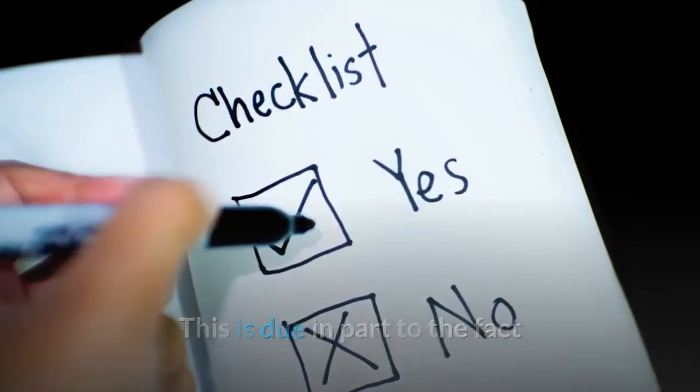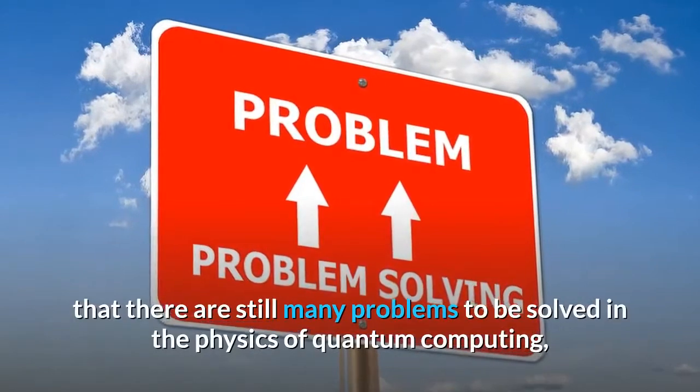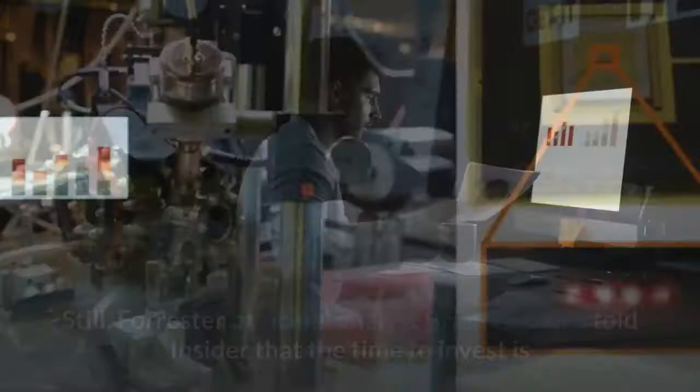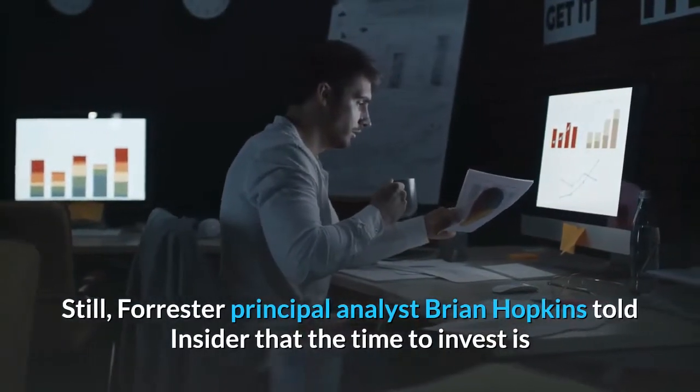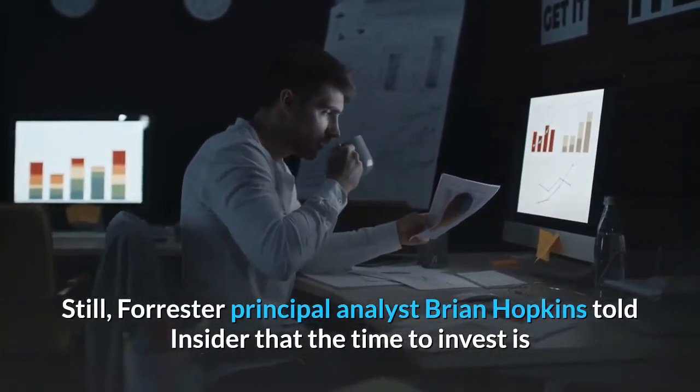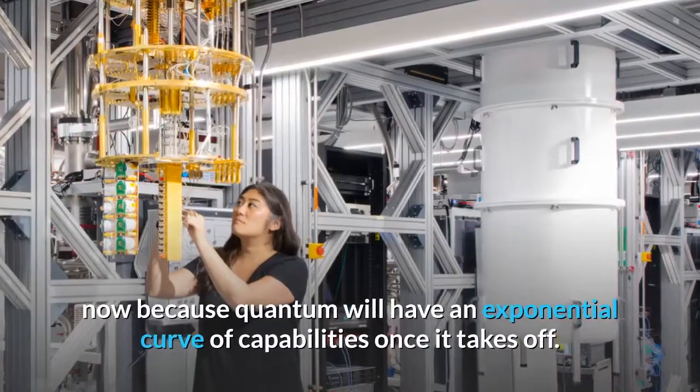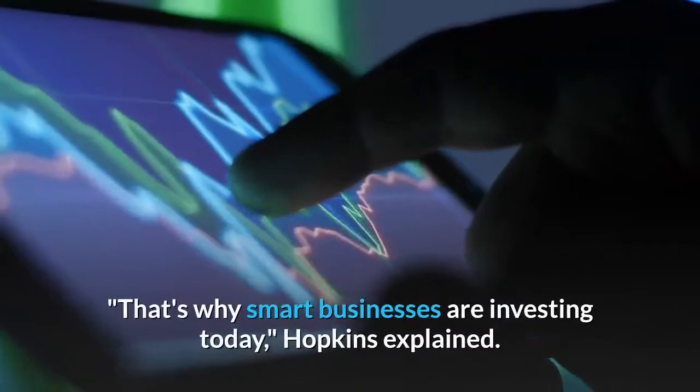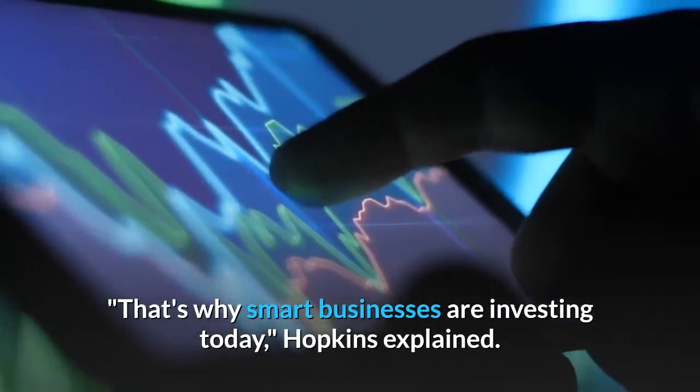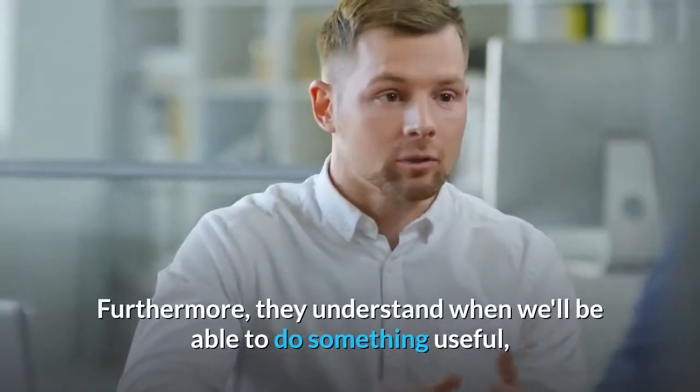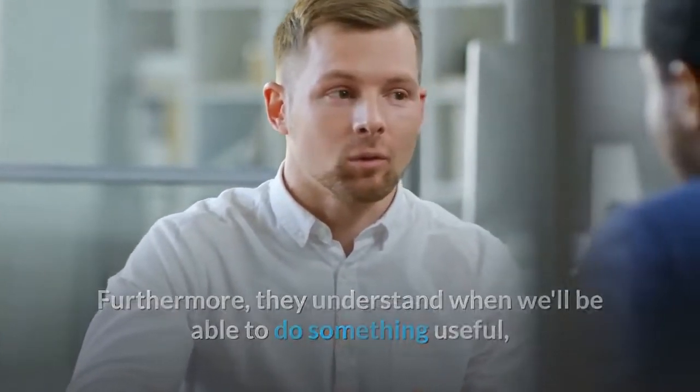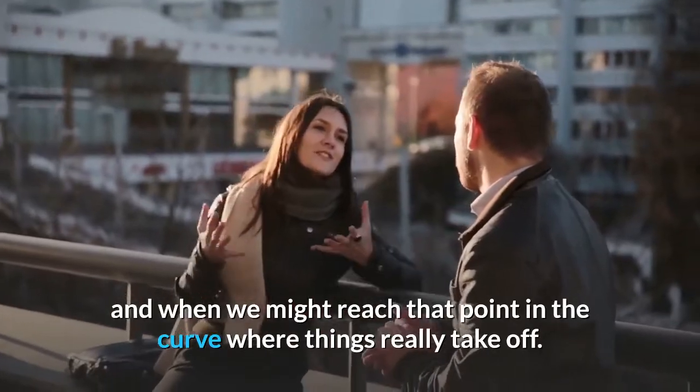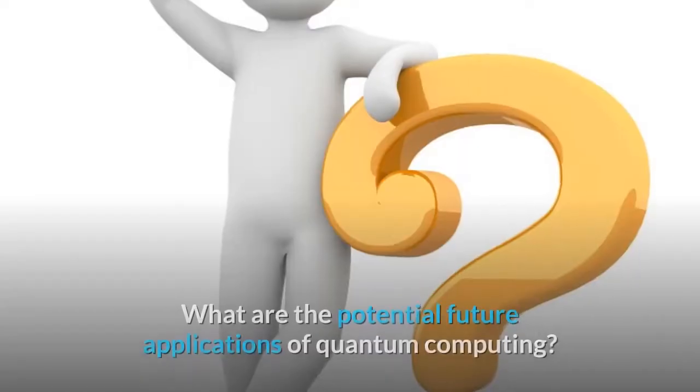This is due in part to the fact that there are still many problems to be solved in the physics of quantum computing, such as stabilizing the qubits in a system. Still, Forrester principal analyst Brian Hopkins told Insider that the time to invest is now because quantum will have an exponential curve of capabilities once it takes off. That's why smart businesses are investing today, Hopkins explained. Furthermore, they understand when we'll be able to do something useful, how it will affect their industry, and when we might reach that point in the curve where things really take off.